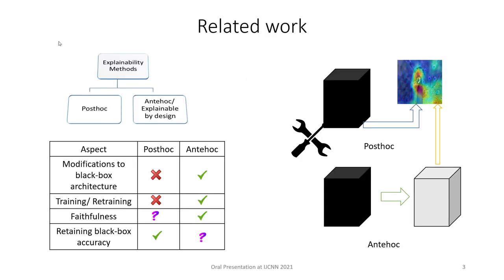In the XAI literature, methods can be broadly categorized into two: post-hoc and ante-hoc methods. In a post-hoc method, you don't perform any modification to your black box model; you tweak into its internals and generate an explanation stating which features are integral towards the prediction. In an ante-hoc model, you make modifications to the architecture to incorporate explainability by design during training. In ante-hoc, faithfulness is guaranteed whereas accuracy retainment is a challenge, while in post-hoc, accuracy is retained but achieving a faithful explanation is the challenge.